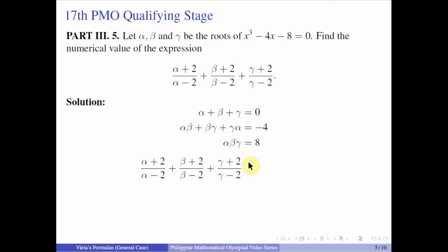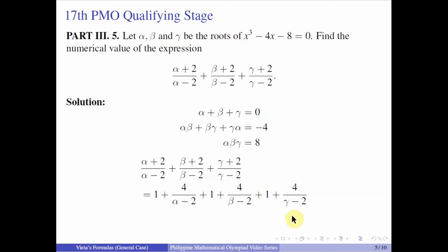Now let us work with the expression. We can do a usual division by segregating the quotient from the remainder. When we divide alpha plus 2 by alpha minus 2, we get a quotient of 1 and remainder of 4, ending up with 1 plus 4 over alpha minus 2. Doing that for the other two fractions as well, we combine the constants to get 3 plus 4 over alpha minus 2 plus 4 over beta minus 2 plus 4 over gamma minus 2. We could combine these fractions using LCD and the FOIL method, but in this video we will use a different approach to avoid that.